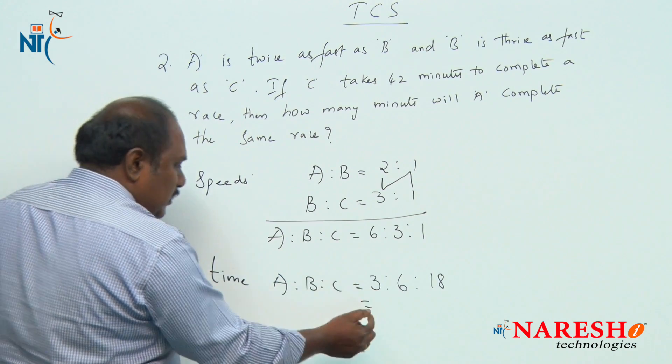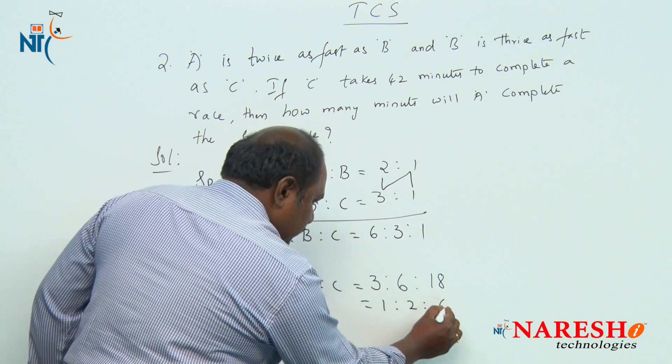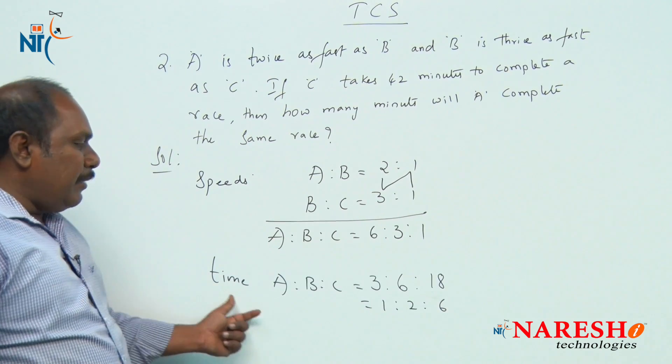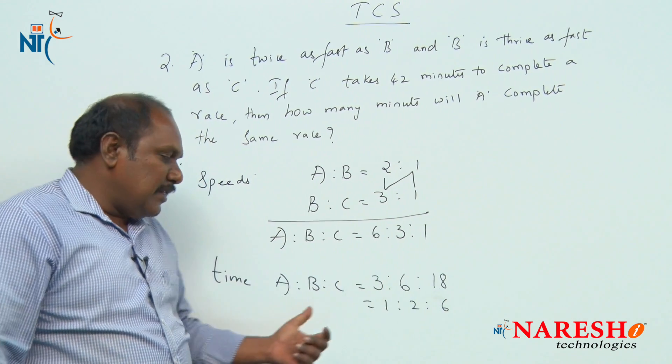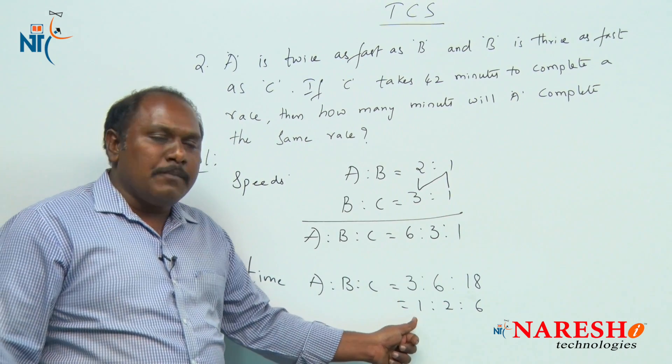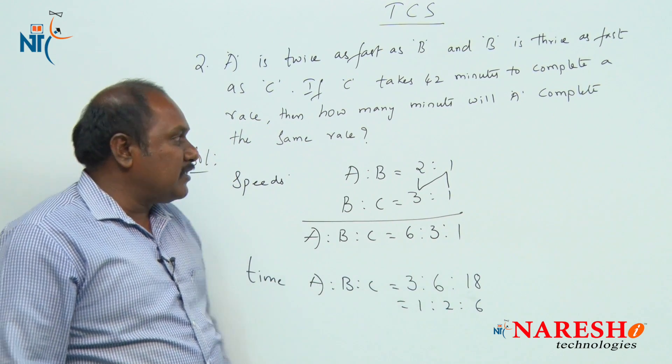Ratio should always be written in lowest terms. So 1 is to 2 is to 6. The time taken by A, B and C will be in the ratio of 1 is to 2 is to 6. That is, if A takes 1 minute to complete the race, B should take 2 minutes and C should take 6 minutes.